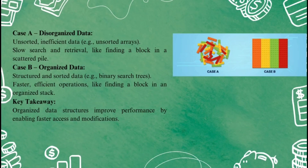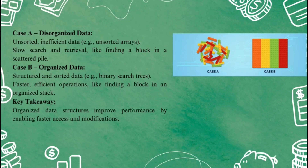Coming to the next slide, take a look at Case 1. Here we see a bunch of building blocks thrown together in a messy and unorganized pile. Imagine this is a real-world representation of unsorted data — perhaps an unsorted array or list. If you needed to find a specific piece in this mess, it would take a lot of time. That's the challenge we face when working with disorganized or inefficient data structures. Now let's shift to Case 2. Notice how all the blocks are neatly arranged by color and size. This organization can be compared to sorted data or optimized structures such as binary search trees or hash tables. Here it's much easier and faster to find the block you're looking for, because everything has a proper place. This is the power of efficient data structures.